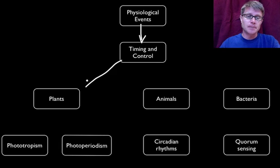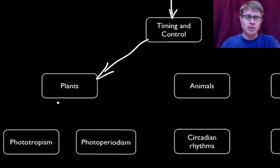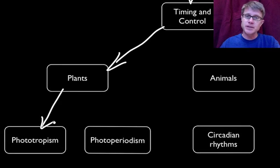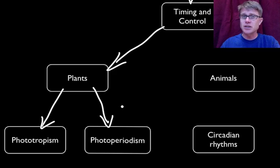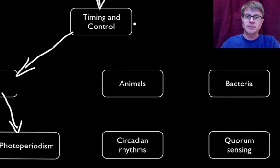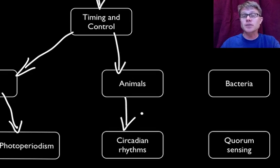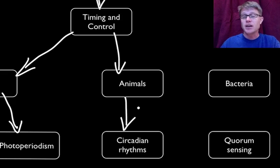First I'll start with plants. Two big things you should understand about plants are phototropism — that's how we grow towards or away from light — and then photoperiodism — how do plants respond to changing amounts of light throughout the seasons? Next I'm going to talk about animals and the importance of circadian rhythms, but we'd also find circadian rhythms in a fungus or in a plant as well. They're all tied to the time of the day.